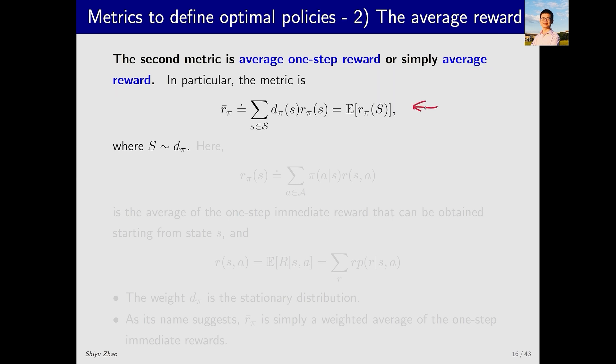It's expressed as this. We can see that here, instead of v_π(s), we now have r_π(s). r_π(s) represents the average immediate reward I can get when starting from state s. Its expression will be given shortly. d_π(s) is the weight for state s. From the subscript we can tell it is the stationary distribution which depends on the policy π. Then, we take the weighted average of r_π(s) to obtain this metric, which we call r̄_π.